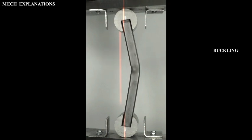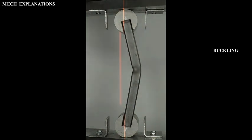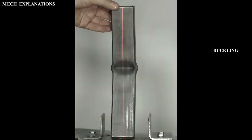If the buckled member is part of a larger assemblage of components such as a building, any load applied to the buckled part of the structure beyond that which caused the member to buckle will be redistributed within the structure.